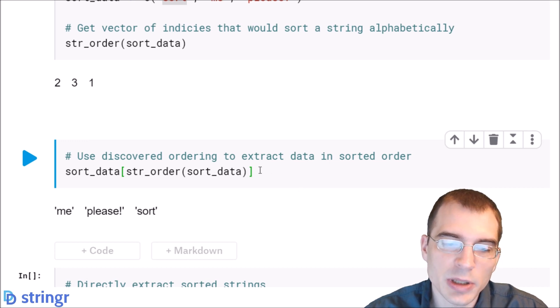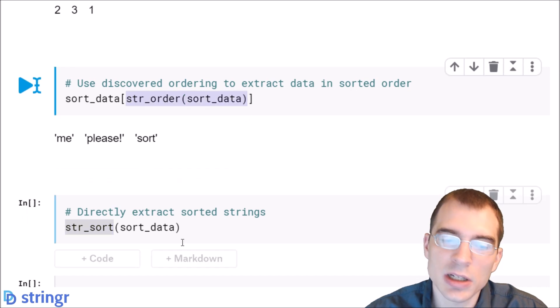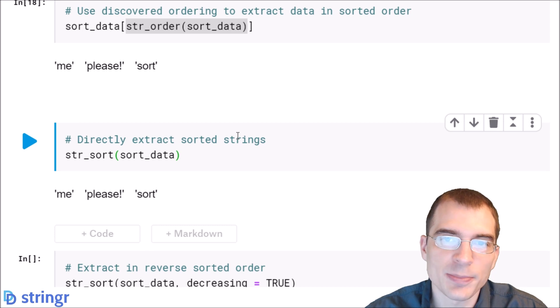But this is a little bit messy looking, so you can do it directly with the function str sort instead. So str sort essentially did exactly what we just did above without having to explicitly do the indexing yourself. So if we run str sort on the data, we'll get the same result.